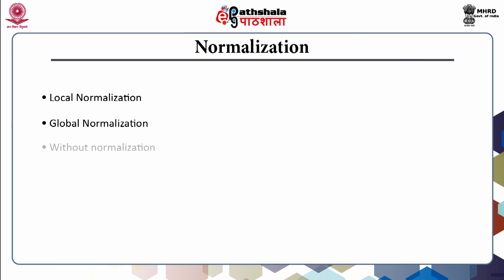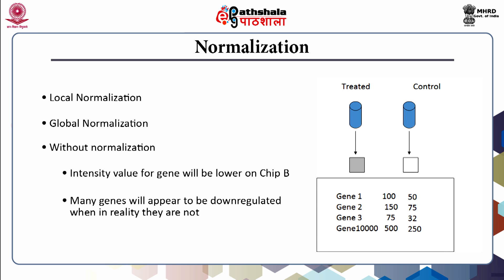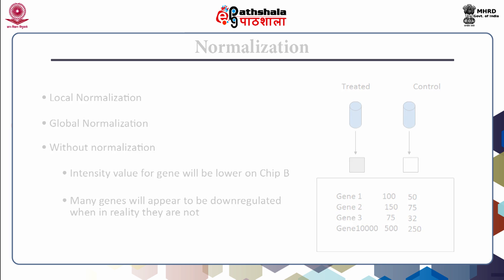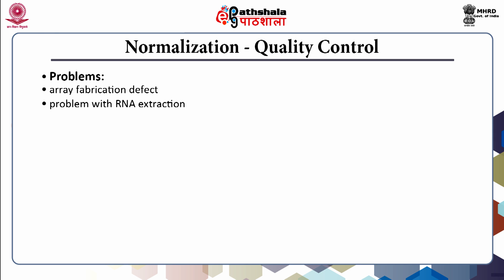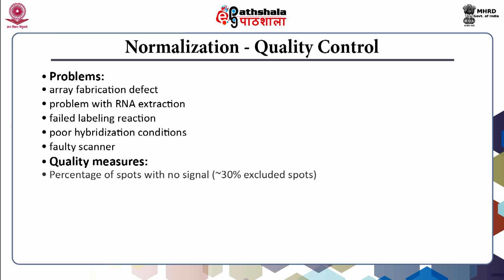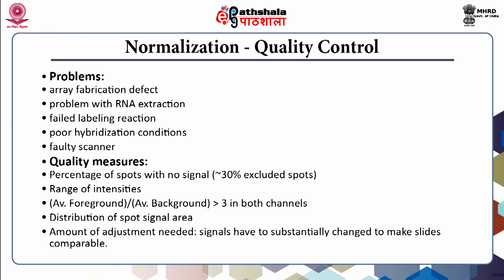Procedures for normalization include estimating missing values and then performing normalization at either local or global scales. Microarray experimentation has substantial problems involving array fabrication defects, problems with RNA extraction, failed labeling reactions, poor hybridization conditions, or faulty scanners. There are biological and technical problems that must be addressed so that normalization becomes the most important and integral part of understanding DNA microarrays.